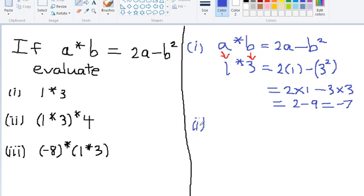Part 2, we have 1 star 3 star 4. But we want to work with 2 numbers because we are using a binary operation and binary implies 2 of something. But if you look at part 1, we worked out 1 star 3 already and we got negative 7. So we are replacing the bracket term 1 star 3 by negative 7 star 4.